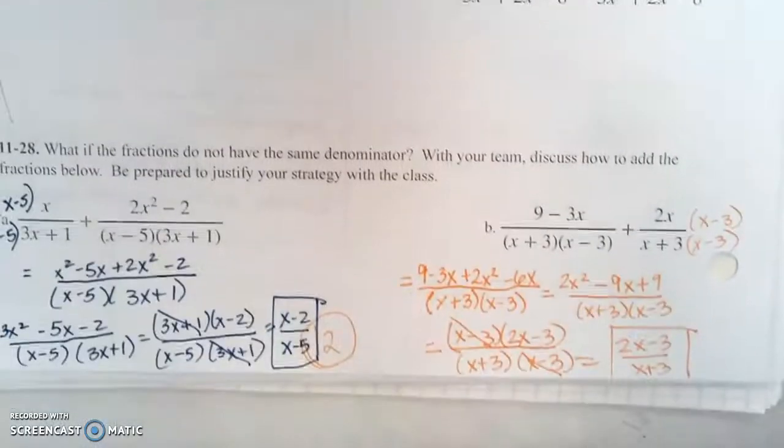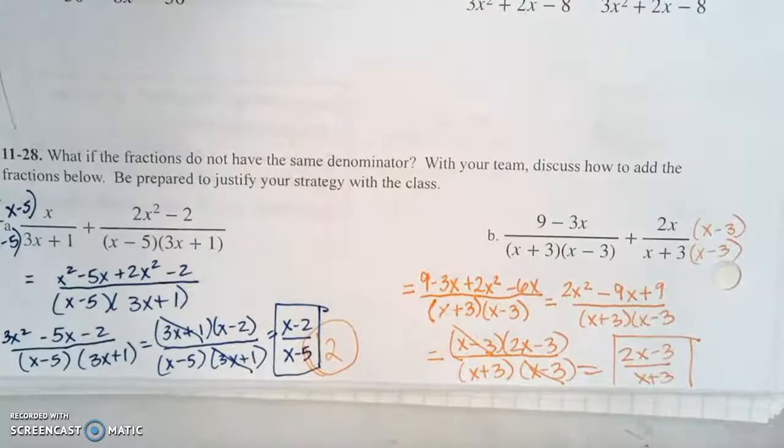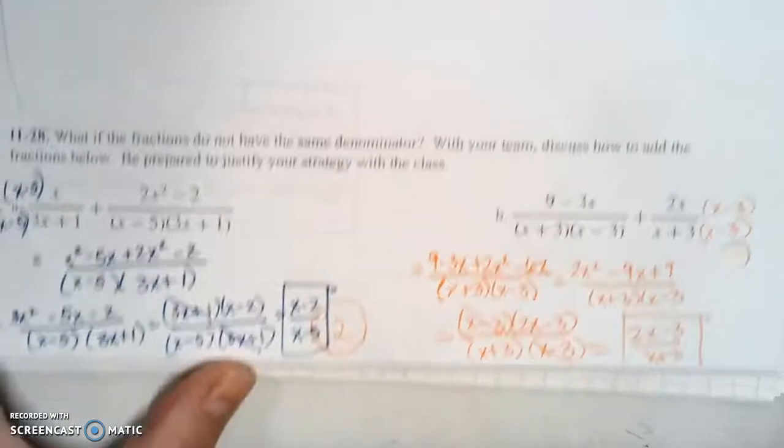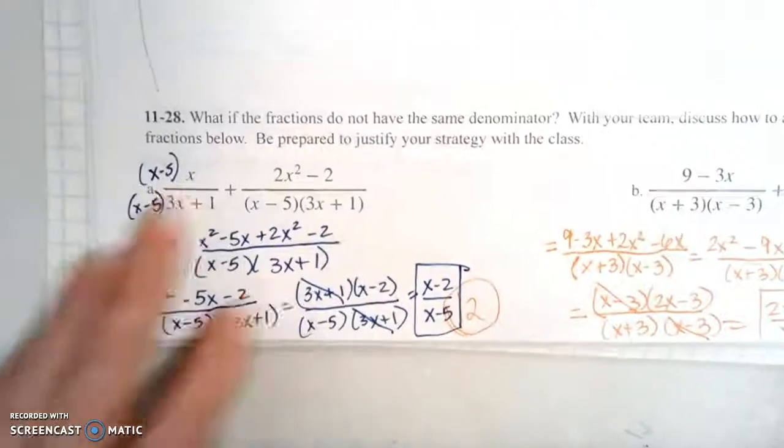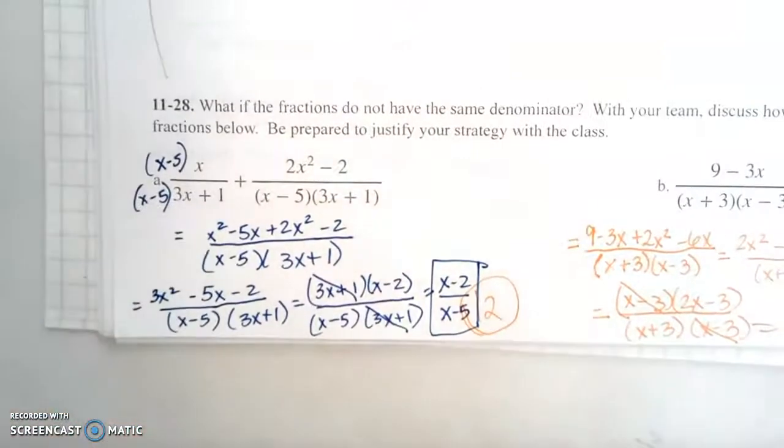Let's jump down to 28, which says what if the fractions do not have the same denominator? We're supposed to discuss how to add the fractions below. Be prepared to justify your strategy. Okay, so let's look at the one on the left first.